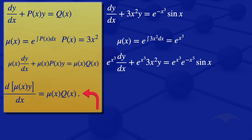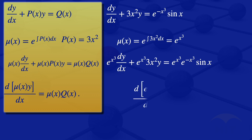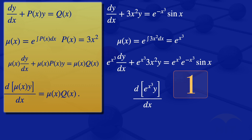The left hand side becomes the derivative of mu of X multiplied by Y — that is, the derivative of exponent of X cubed multiplied by Y with respect to X. On the right hand side, exponent of X cubed multiplied by exponent of minus X cubed gives us 1, so we remain with sine of X. Therefore the right hand side is sine of X.